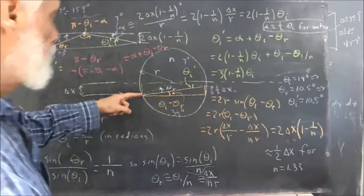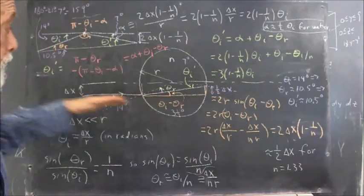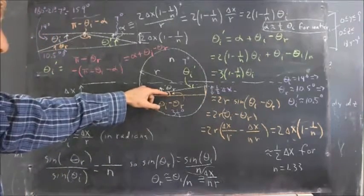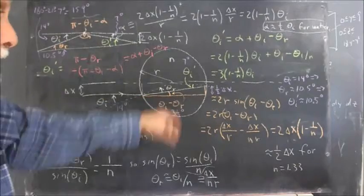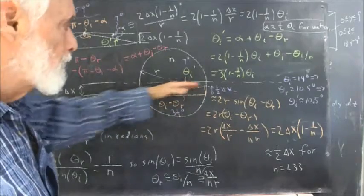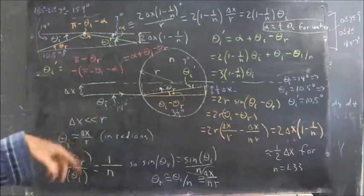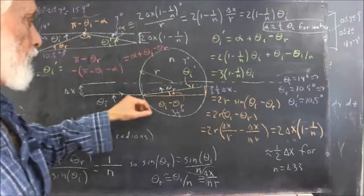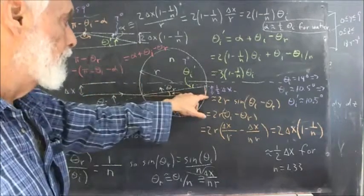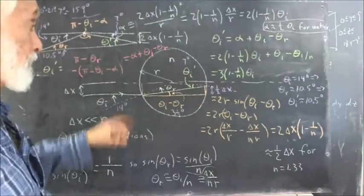It follows that the line of the refracted ray is going to make an angle with the line of the original ray of theta sub i minus theta sub r. That angle difference is going to give us the distance that the ray has traveled closer to the axis. If delta x is small, then the distance across the sphere is very close to the diameter, or twice the radius of the circle.